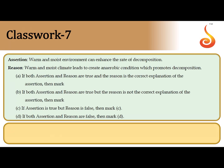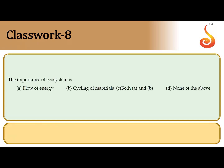The seventh question is an assertion-reason question. The assertion says: warm and moist environment can enhance the rate of decomposition — which is true. The reason says: warm and moist climate leads to anaerobic condition — which is not entirely true. So assertion is correct whereas the reason is false. The correct answer is option C.